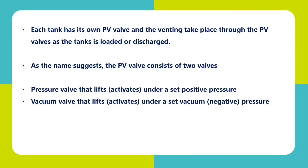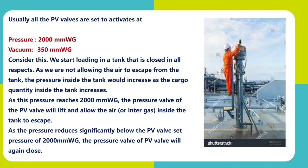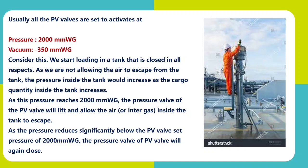The pressure valve will activate under the set positive pressure, and the vacuum valve will activate when vacuum is created inside the tank. Usually, it is set at a pressure of 2000 mm WG and a vacuum of minus 350 mm WG. Consider starting loading in a tank that is closed in all respects. As we are not allowing the air to escape from the tank, the pressure inside the tank would increase as the cargo quantity increases. As this pressure reaches 2000 mm WG, the PV valve will activate and the gases inside the tank will escape through the PV valve. As pressure reduces significantly below the set level, it will close.